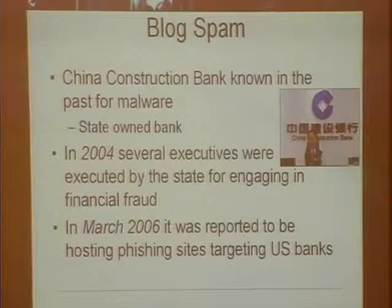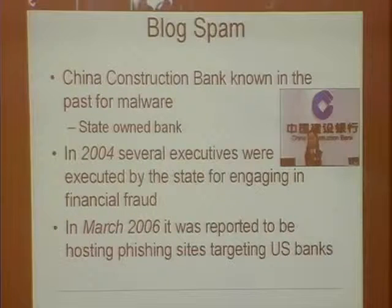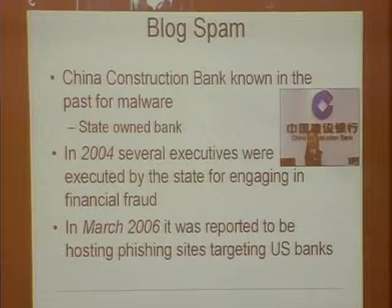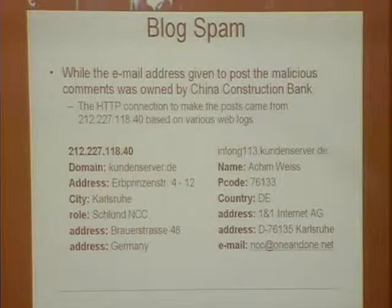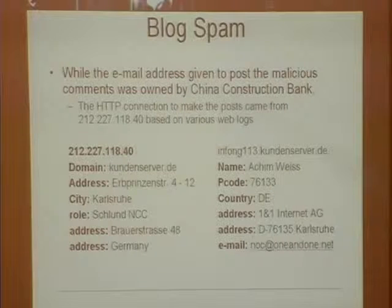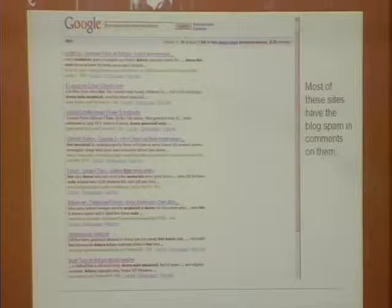Maybe they got hacked and are just a passive victim, with bad guys using them to launch more spam. But it turns out China Construction Bank is a valid state-owned bank in China that's been known over and over again for being involved in malware. Several attacks were domestic inside China, and executives were executed for this. It's been reported to be involved in phishing and targeting U.S. banks. The IP address actually making these posts is in Germany. So we've got China and Germany. We looked at how many blogs have this problem — on this particular case, about 7,000 blogs had this stuff, and that's just one variant, so you can extrapolate to tens of thousands of sites.